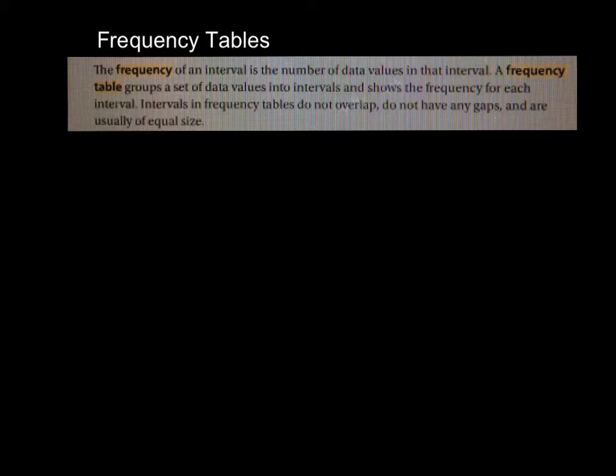For example, if we're talking about the number of stolen bases for an athlete, we could have an interval of 0 to 6 stolen bases. And then every time they got 0 to 6 stolen bases, we would do little tally marks. When they get over 6 stolen bases, we have to go to the next interval. The intervals have to be the same size.